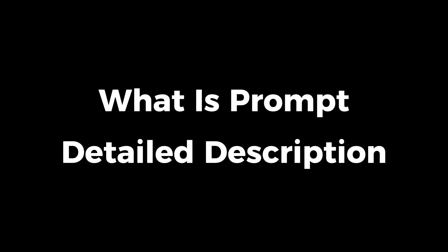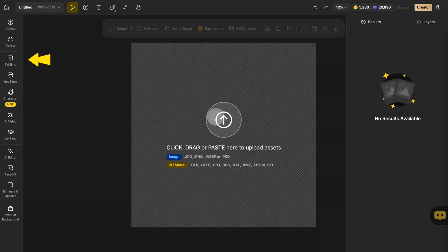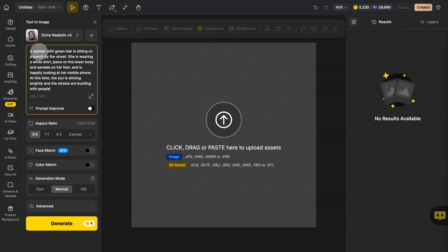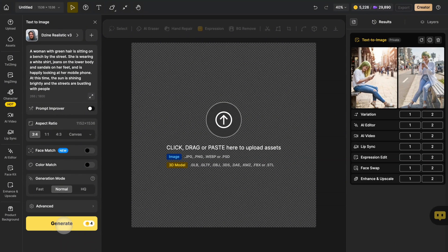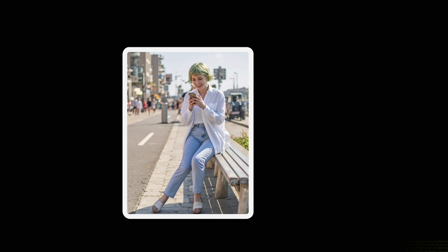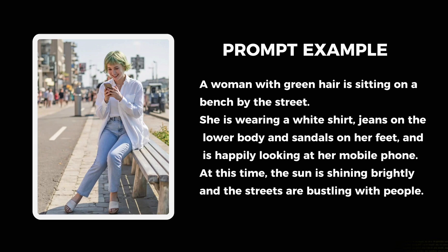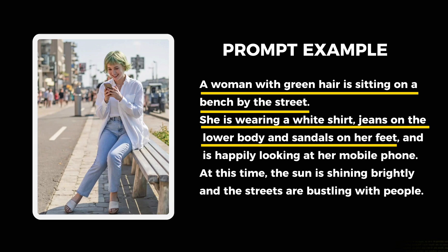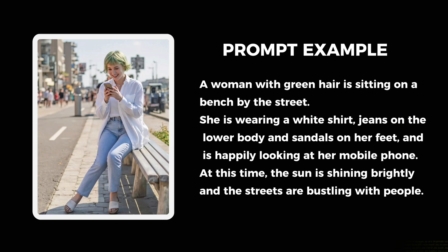First of all, we need to understand what a prompt is. Click on the text to image in the global sidebar. You can enter your prompt here and then click Generate. You can see that the result is generated according to the prompt we wrote. Overall, a prompt is a textual description that tells artificial intelligence what kind of image to create. It can shape all aspects of the final image, from large images to the tiniest details. Generally speaking, the better the prompt is, the better the image will be.